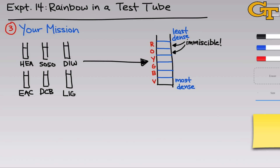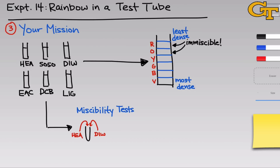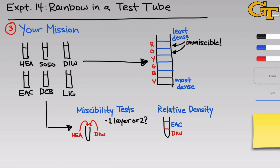To figure out which of the six substances belongs in each position, we first need to perform miscibility tests to determine which liquids are miscible and immiscible with one another. The idea is to pick two liquids, place small amounts into a test tube, and look for the formation of one continuous solution or two distinct layers. While doing these tests, when you encounter mixtures that form two layers, examine their relative density — for example, mixing the EAC and DIW solutions, DIW would sit on the bottom and EAC on top, indicating DIW is the more dense solution.